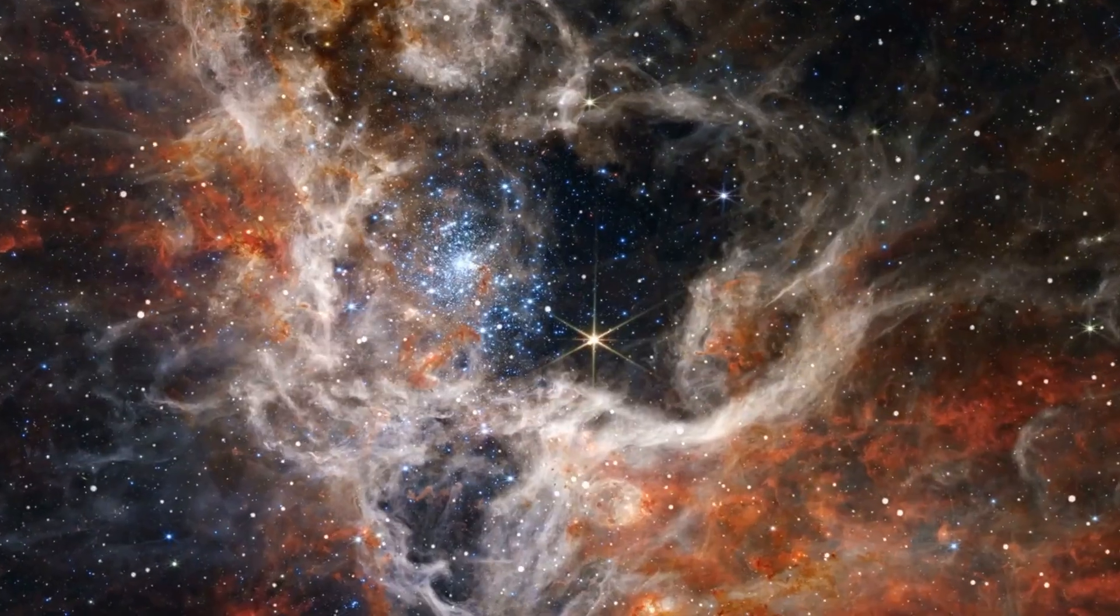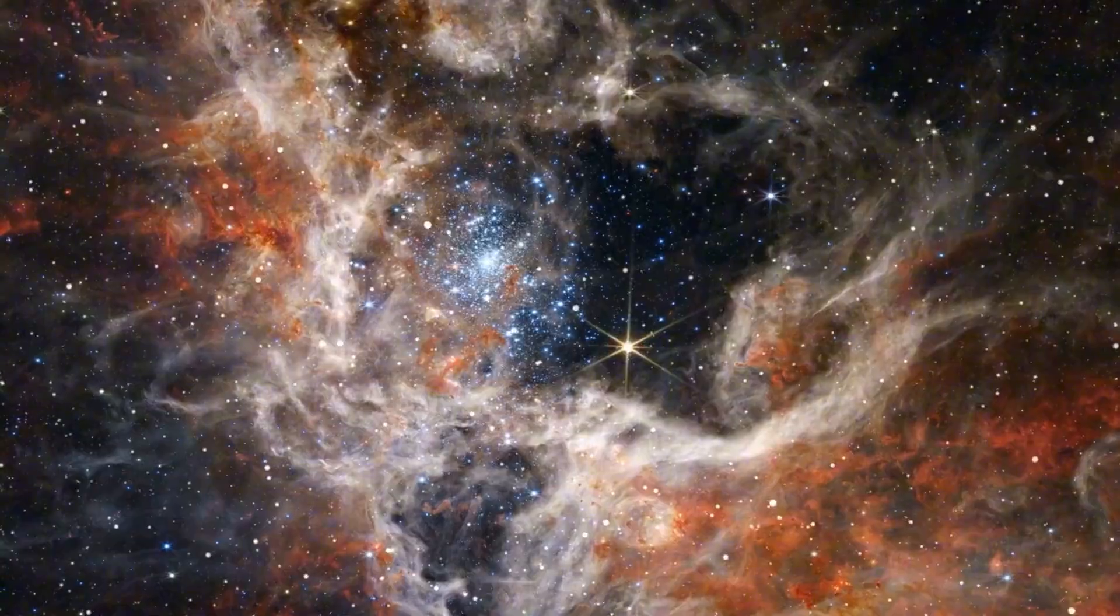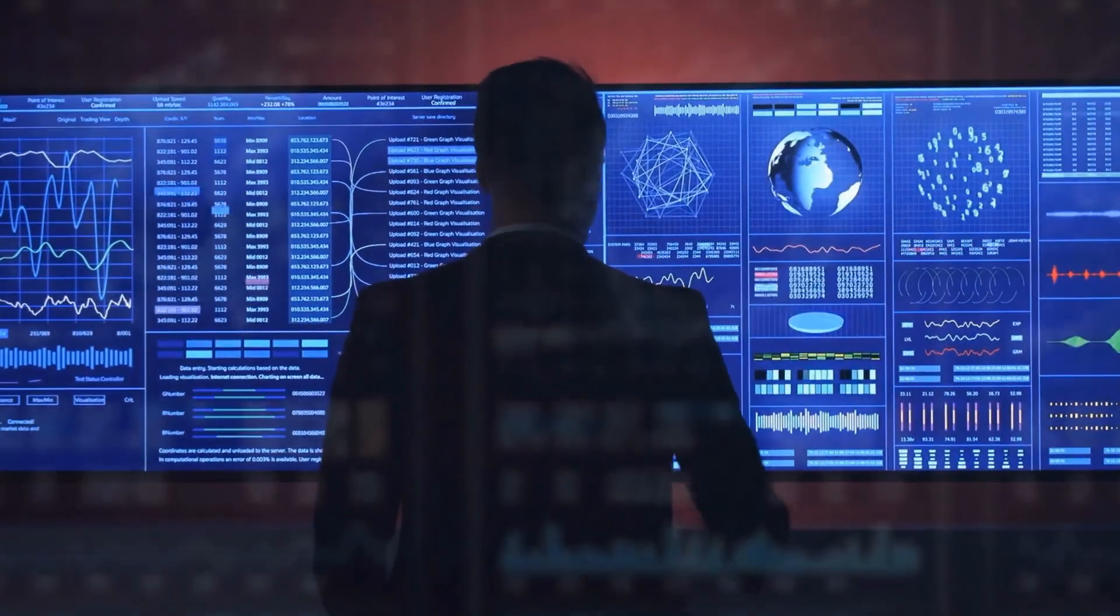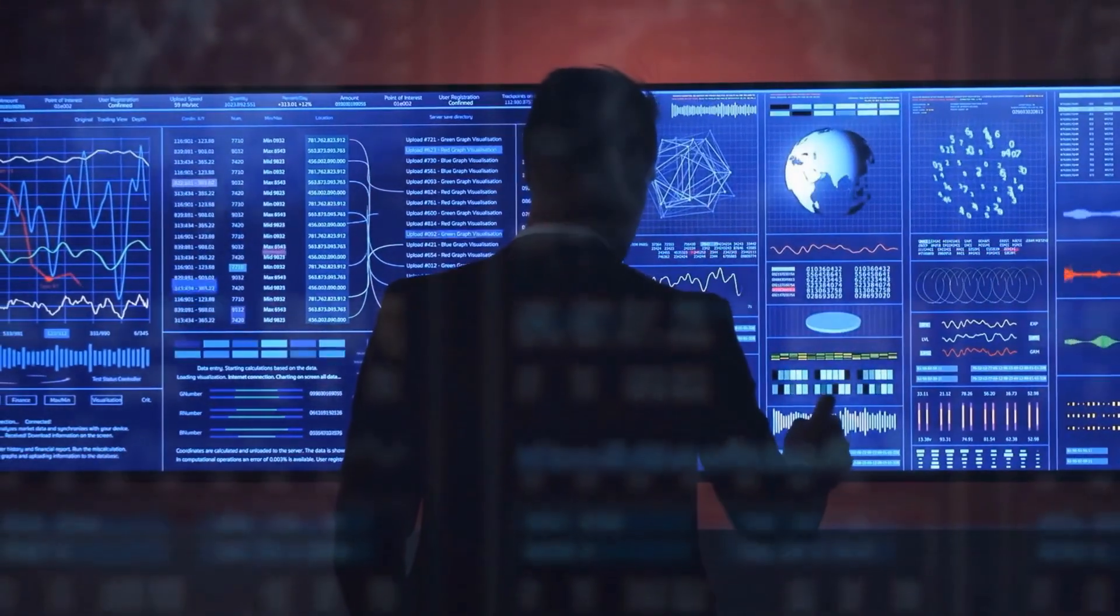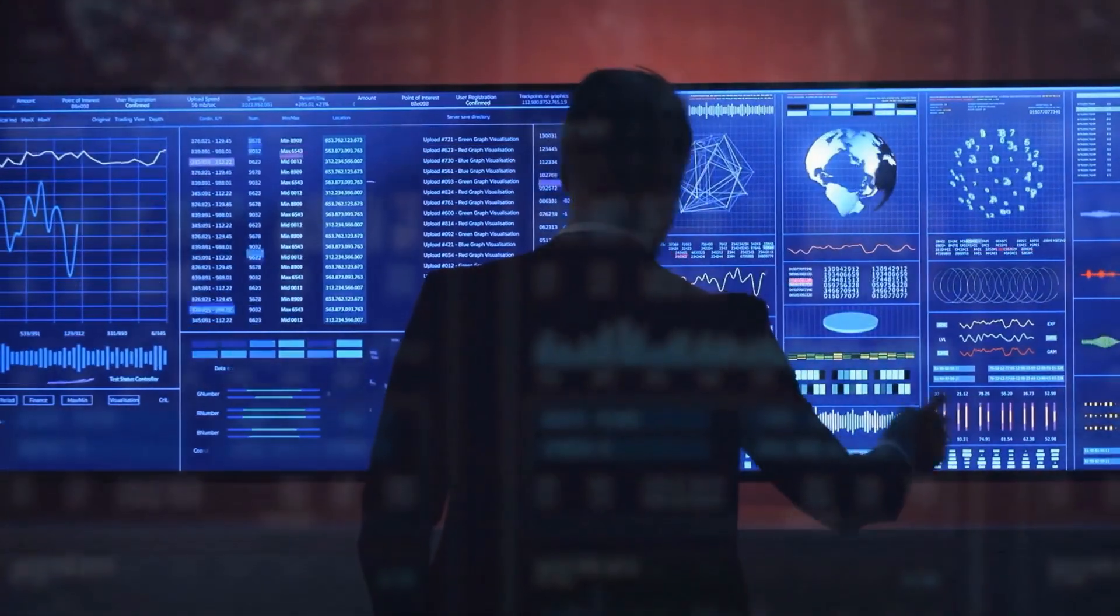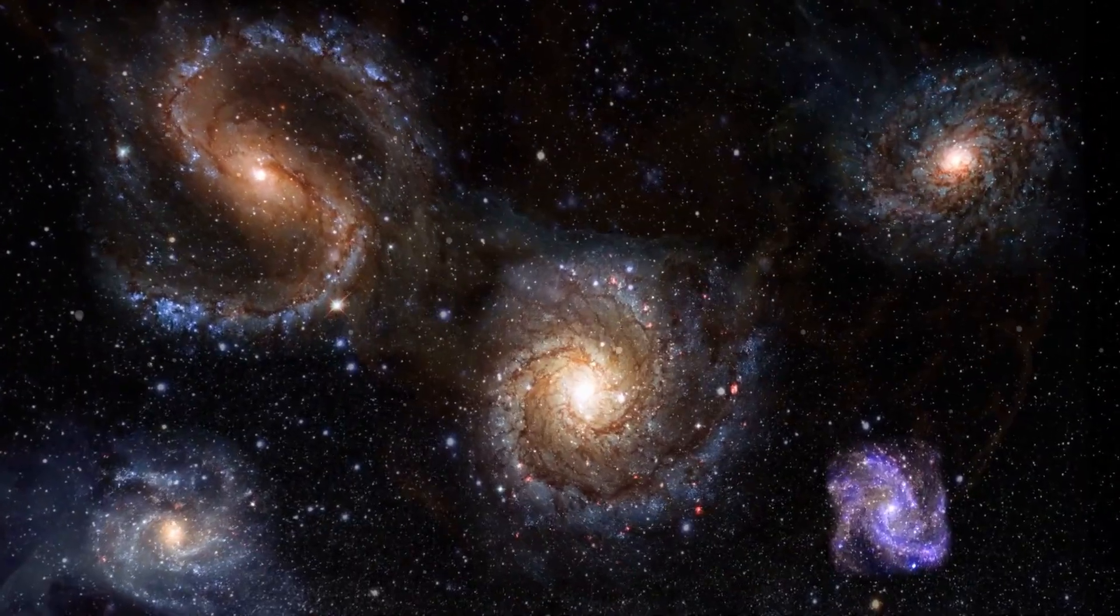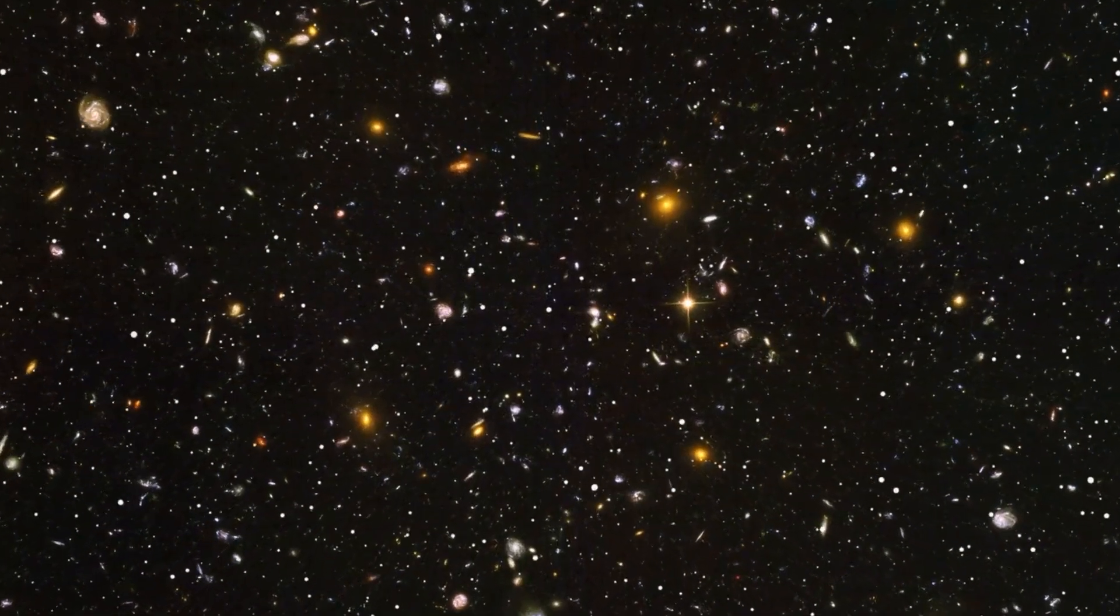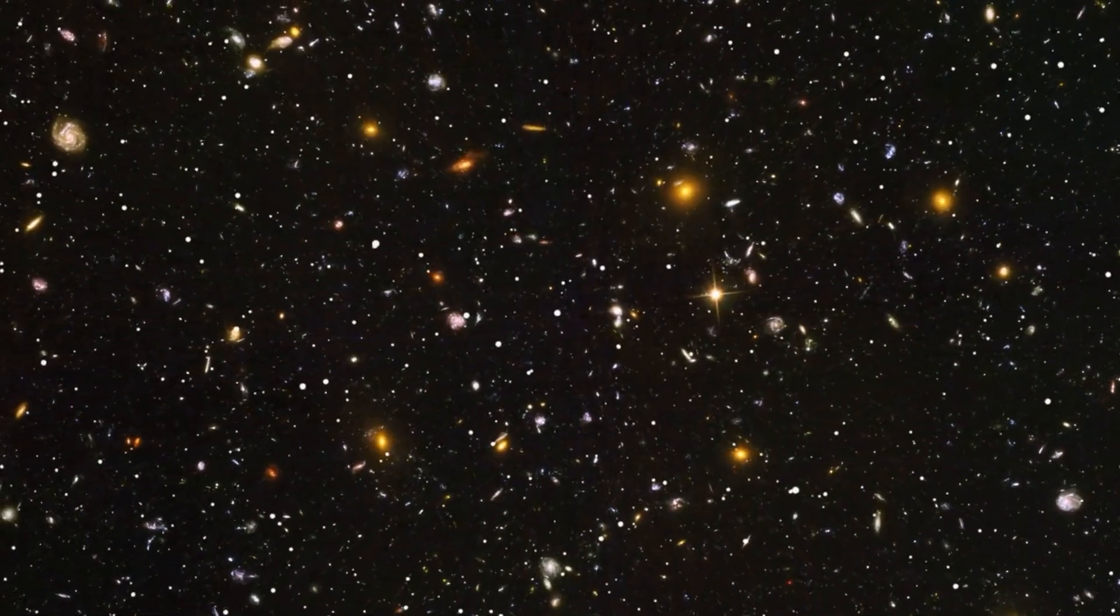It began with a surprising discovery. Astronomer Lior Shamir was studying over 260 galaxies using data from the James Webb Advanced Deep Extragalactic Survey. But what he noticed wasn't just another distant galaxy or ancient star. He found a pattern, a bias, a cosmic preference.